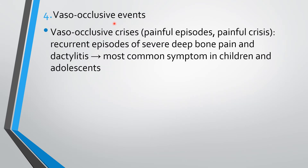The fourth type of crisis is vaso-occlusive crisis. These are very painful episodes, otherwise called painful crises, with recurrent episodes of severe deep bone pain and dactylitis. Dactylitis is inflammation of the fingers and is the most common symptom in children and adolescents with sickle cell anemia — an important point to remember for staff nurse examinations.